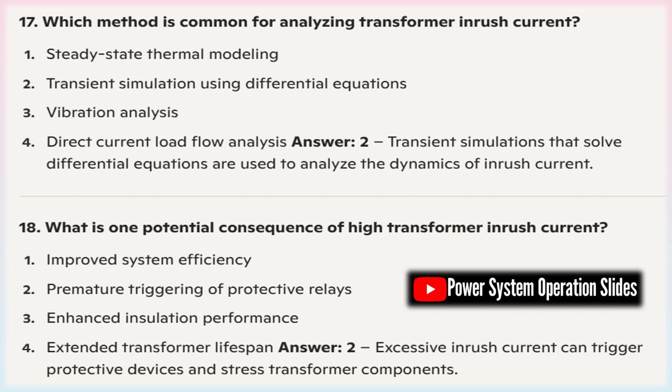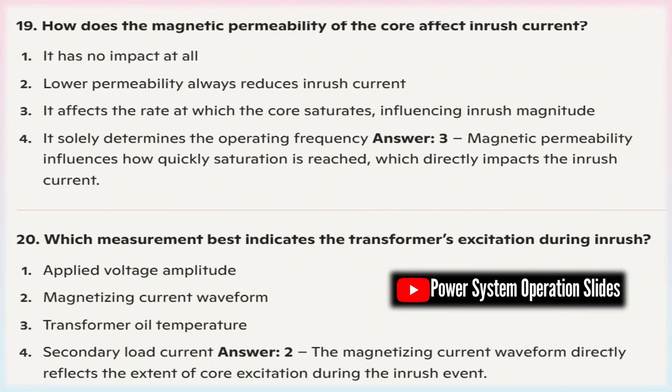System planning and sizing: Careful system planning is important to ensure that the transformer is adequately sized for the load and operating conditions. Oversizing a transformer can lead to higher inrush currents, since it takes a larger initial surge of current to energize the unit. By selecting a transformer that correctly matches the load requirements, the inrush current can be minimized.